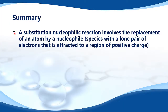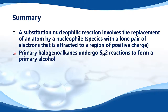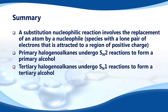Let's have a quick summary. A substitution nucleophilic reaction involves the replacement of an atom by a nucleophile, which is a species with a lone pair of electrons that is attracted to a region of positive charge. Primary halogenoalkanes undergo SN2 reactions to form a primary alcohol. Tertiary halogenoalkanes undergo SN1 reactions to form a tertiary alcohol.